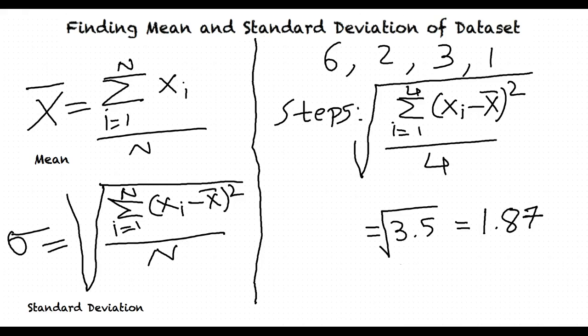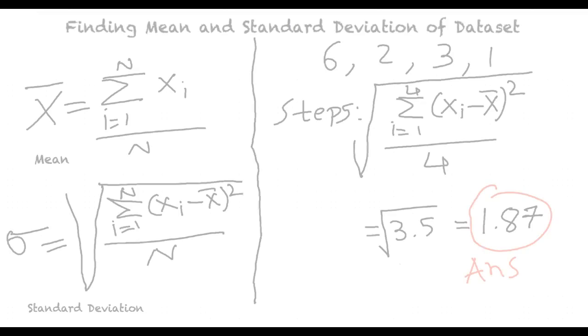Step 5: Take the square root of the value in step 4. The value was 3.5 and the square root will be 1.87. That is the answer.